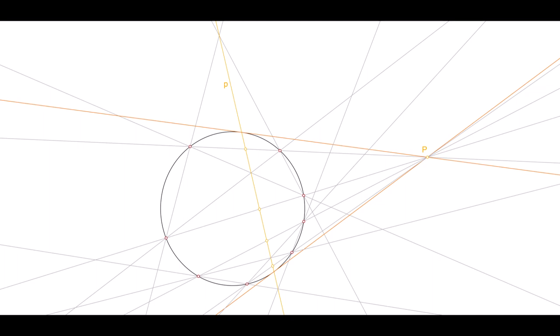Ask your friends from the previous cultural epoch whether they know how to construct tangents without a compass. We call the point P the pole of the line P with respect to the circle, and the line P the polar of the point P. Let the pole travel out to infinite distance, and you again have symmetrical mirroring at the diameter.